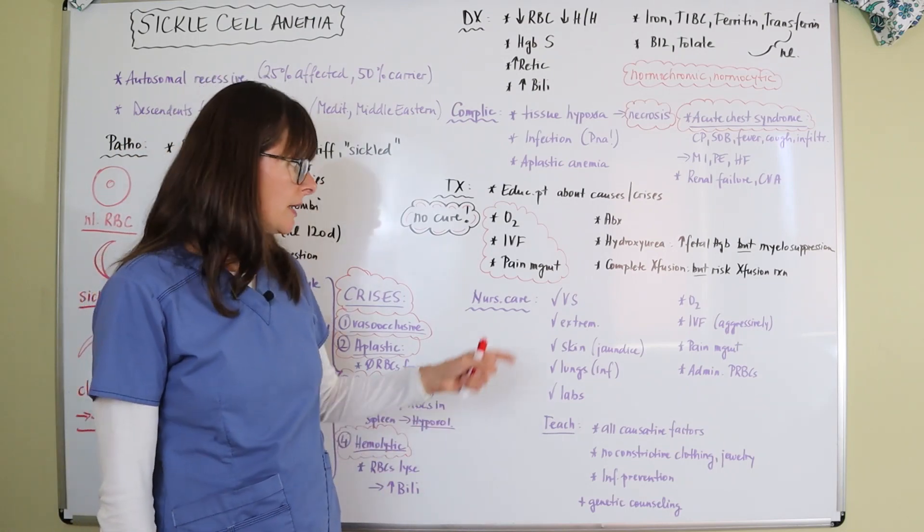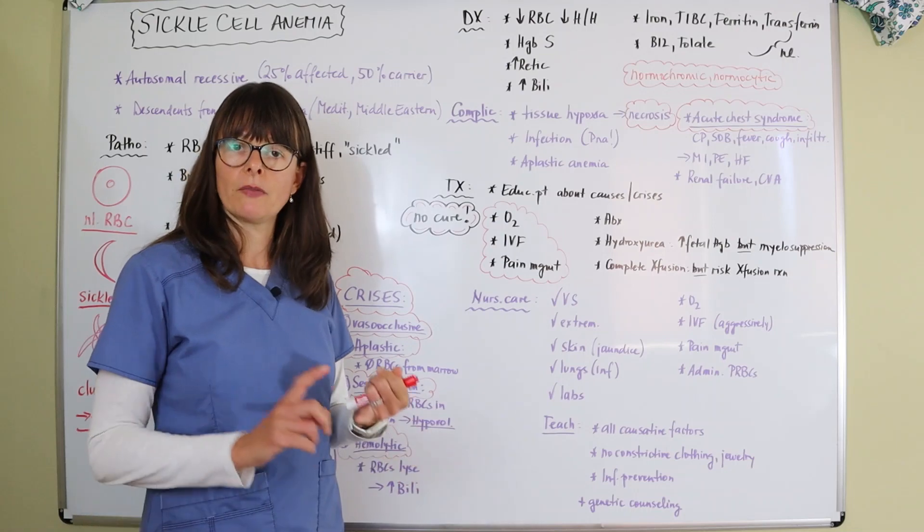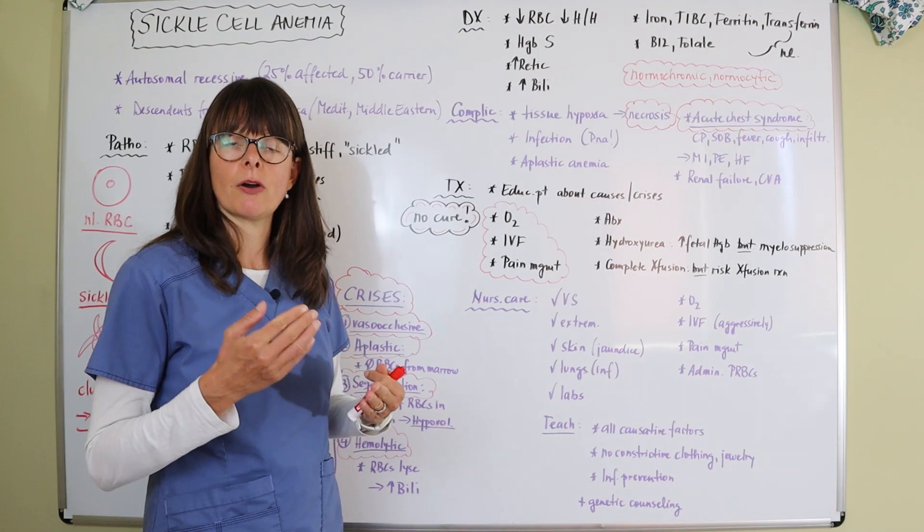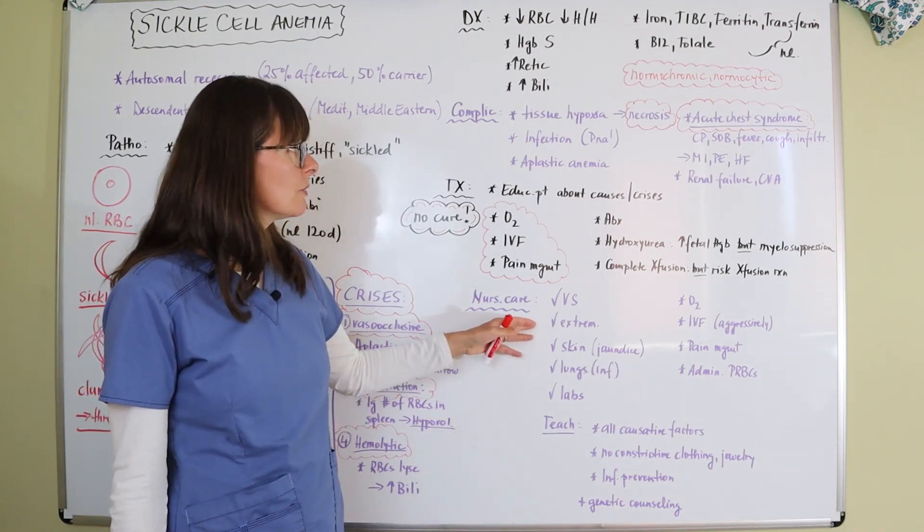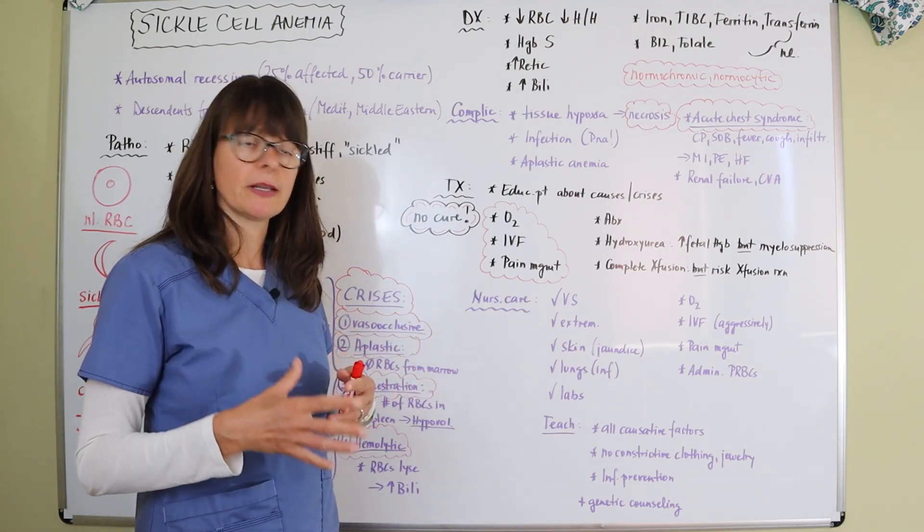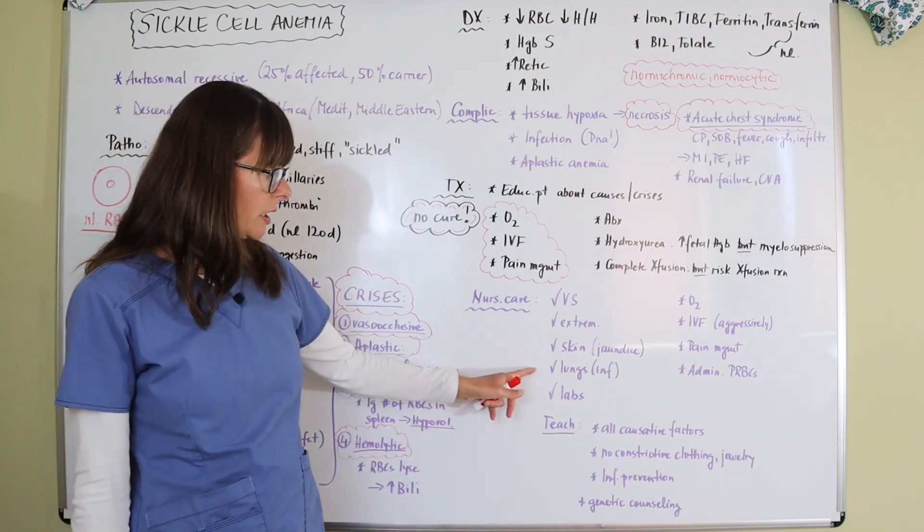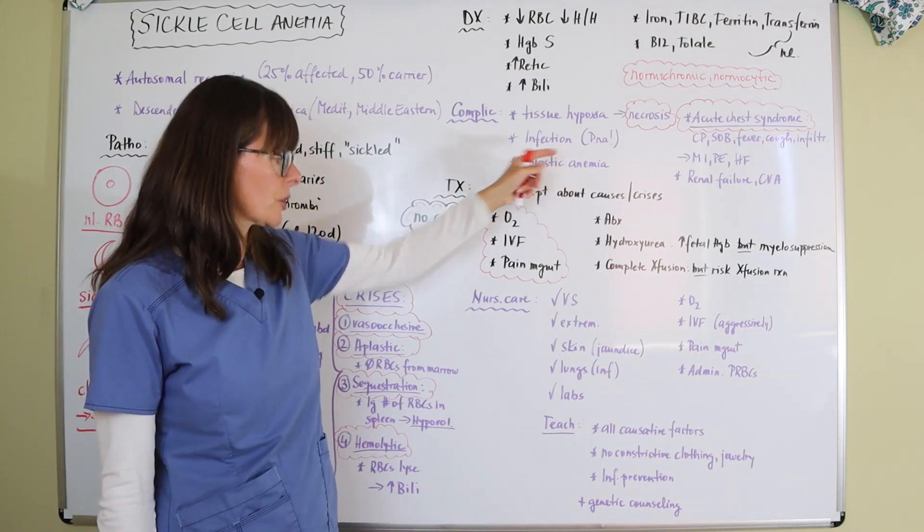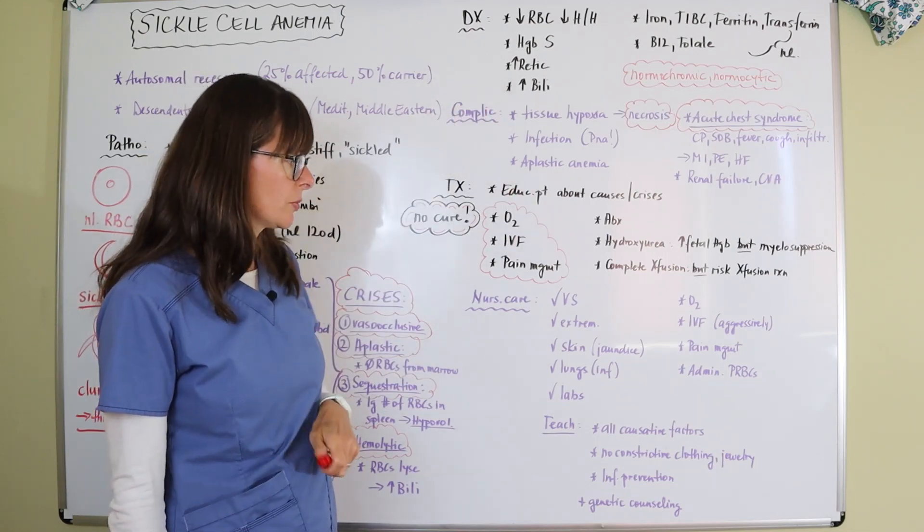So as for nursing care, as always, I want to check vital signs and specifically keep an eye on their heart rate, blood pressure, respiratory rate, because patients with anemia typically are hypotensive and tachycardic. And then check their extremity to see if we have any of this tissue hypoxia present or maybe we see any delayed wound healing. Check their skin for jaundice because of this bilirubin. Check their lungs for infection because we know they're at high risk for pneumonia, that's the most likely type of infection they'll get. And then of course we're going to check their labs, all these things we discussed here.